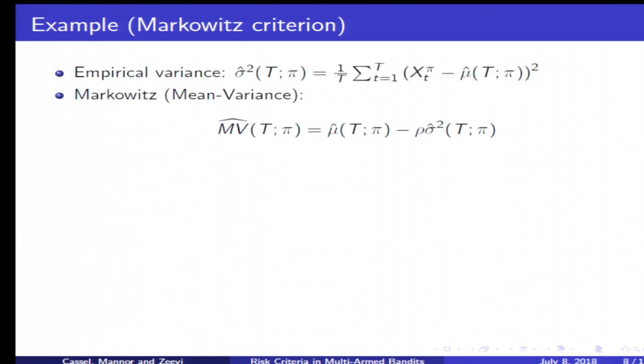An example that could satisfy this is the Markowitz criterion, which is previously studied. Here we consider not only the average reward but also the empirical variance, specifically an additive relation between the two. In this case we again cannot optimize directly, so we want to consider the scheme of oracle and regret.